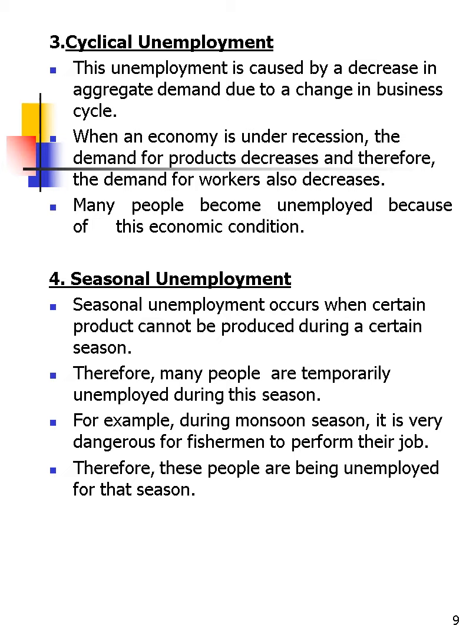The third type is cyclical unemployment — also called classical unemployment — which is caused by a decrease in aggregate demand due to changes in the business cycle. The economy cycles up and down; as we are currently in a recession, this type of unemployment occurs. The fourth type is seasonal unemployment, which occurs when certain products cannot be produced during certain seasons. For example, during the rainy or monsoon season, it is too dangerous for fishermen to work, so they are temporarily unemployed.